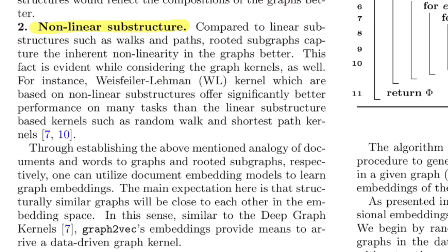The second reason is nonlinear substructure. Since graphs are nonlinear in nature, using nonlinear substructures as the smaller components is a better choice than using linear structures such as walks and paths to represent something nonlinear. The main expectation is that structurally similar graphs will be close to each other in the embedding space. For mining these nonlinear substructures, the authors use something called the WL kernel.